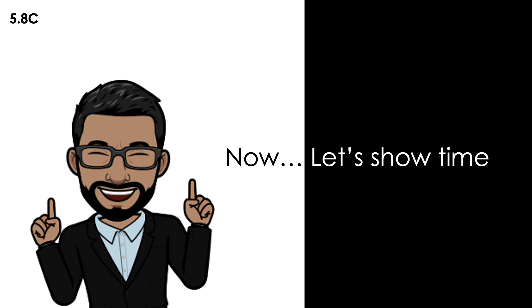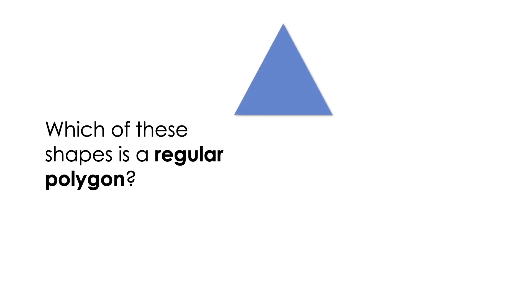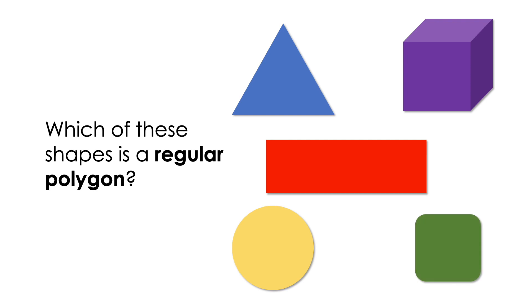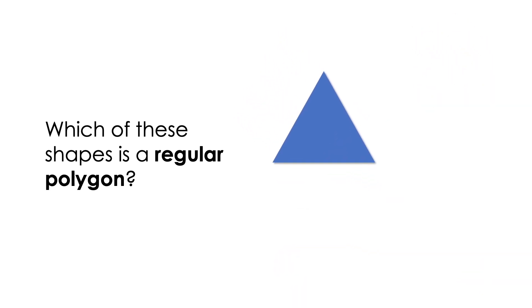Now it's show time. Which of these shapes is a regular polygon? We had this question at the beginning, and now we can answer it. The triangle has all its sides congruent. The cube has a third dimension, so it cannot be a two-dimensional figure. The rectangle is a polygon, but not all its sides are congruent. The circle doesn't have sides, so it cannot be a polygon. The last shape has curves. So the only regular polygon here is the triangle.